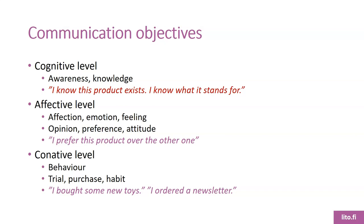And then finally we have the conative level, which means the behavioral level. It can be, for example, a trial — maybe a taste test where someone in the grocery store asks us to taste different spreads on bread. We taste it, and that would be a conative level communication objective for that company to see how many people would try their product. It can also be a purchase, or maybe a habit that we buy more often or regularly. For example, when the customer says they have ordered a newsletter — that is a conative level objective that has been met.